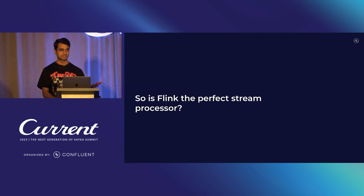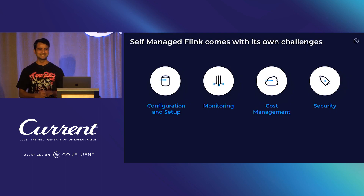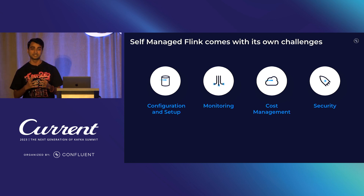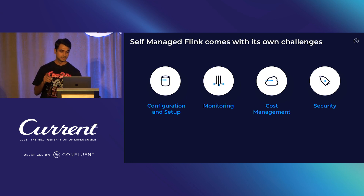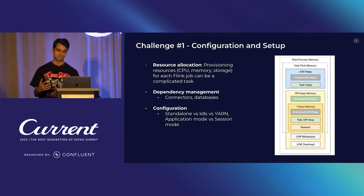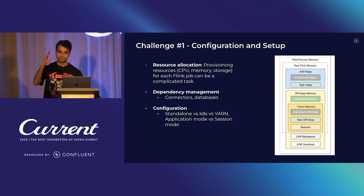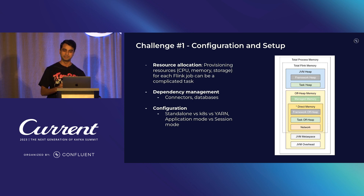Is Flink the perfect stream processor? It solved all the problems with stream processing — but not quite. If you self-manage Flink, if you download open-source Flink and decide to run it on Kubernetes, it will come with a lot of problems. The first is configuration and setup, and the biggest one is resource allocation. Look at this image on the right — these are the kinds of memory configurations you have to set individually in order to achieve performance.